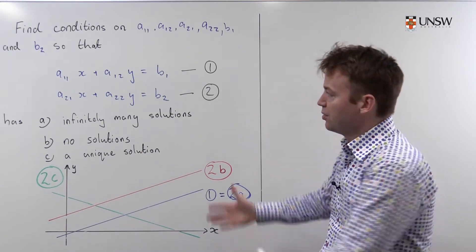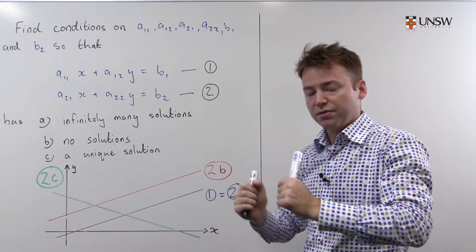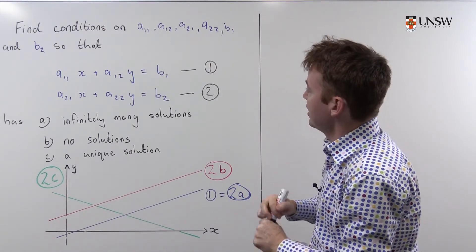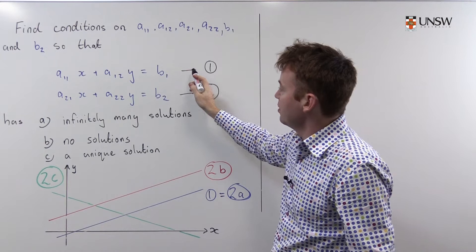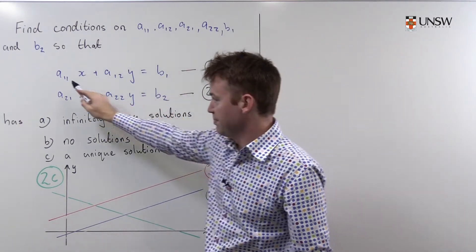Soon you'll be solving all your linear equations using matrices but for now let's just do it the old-fashioned way. What I'm going to do is take equation one and multiply that by a₂₁ and then take equation two and multiply it by a₁₁.